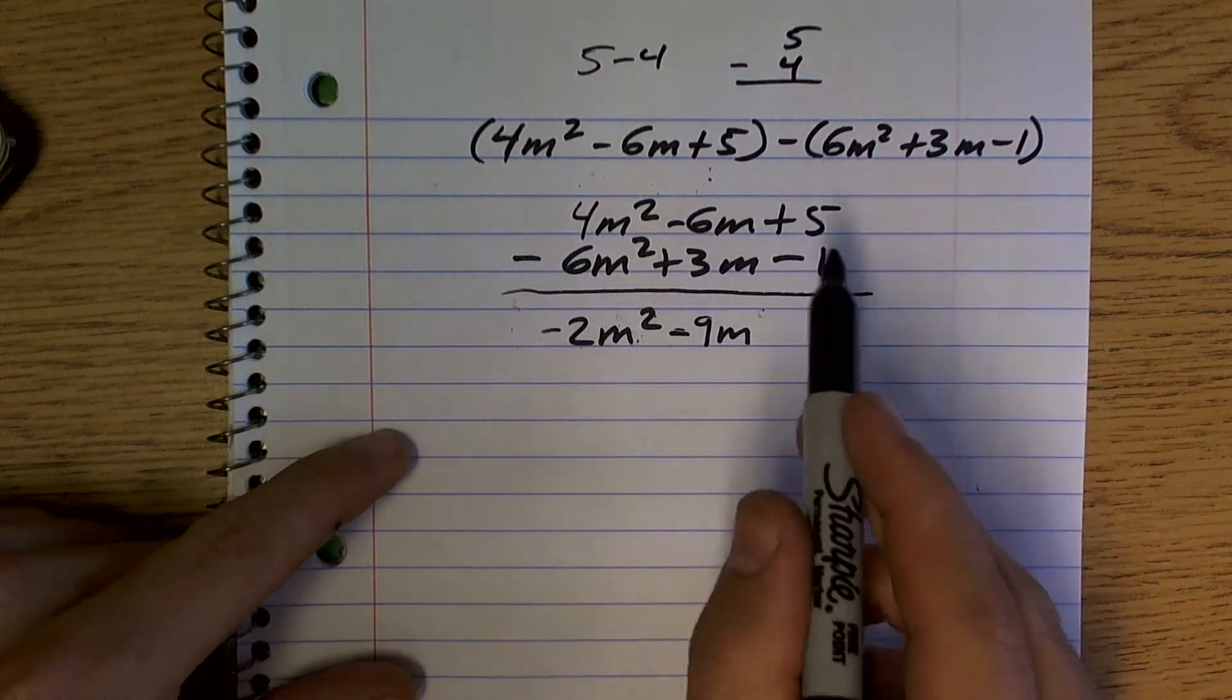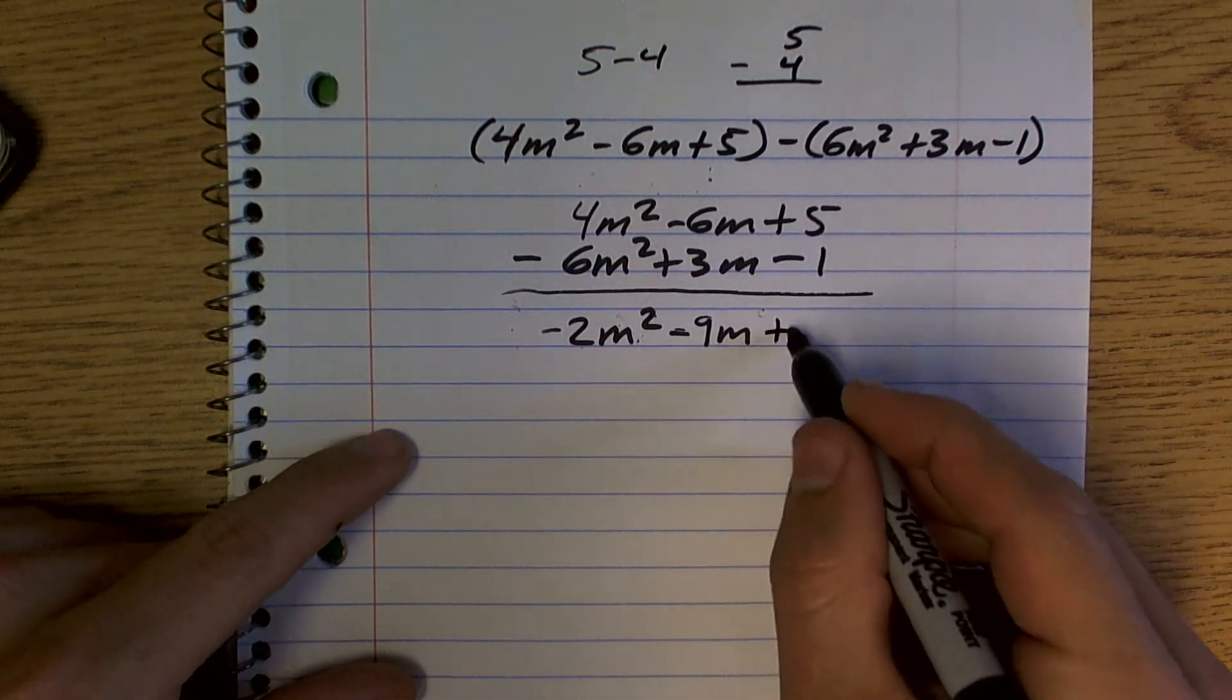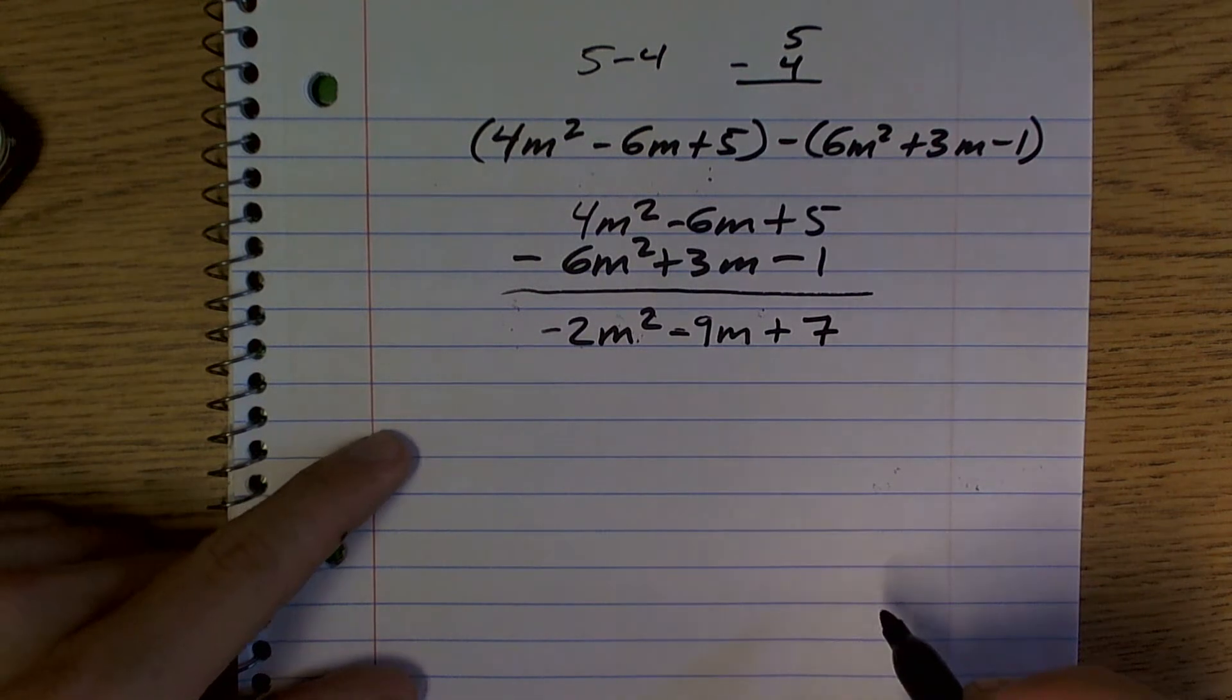And 5 minus a negative 1 is a double negative, which is going to give you a positive 7, okay?